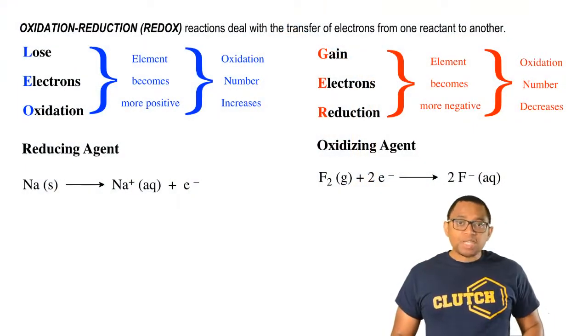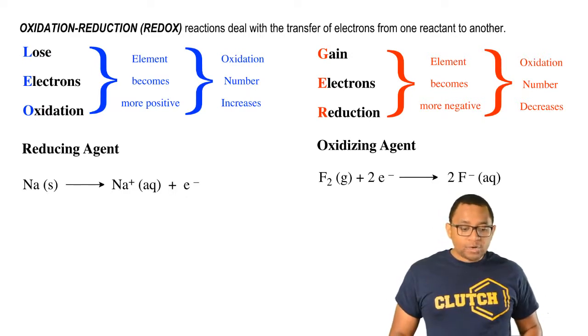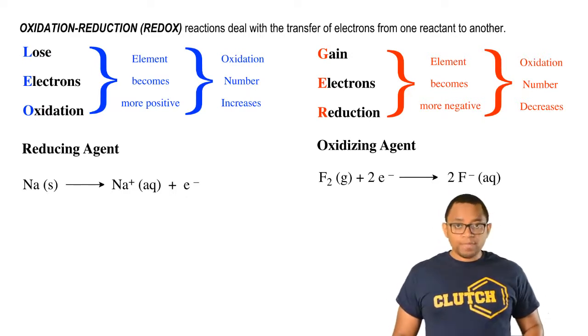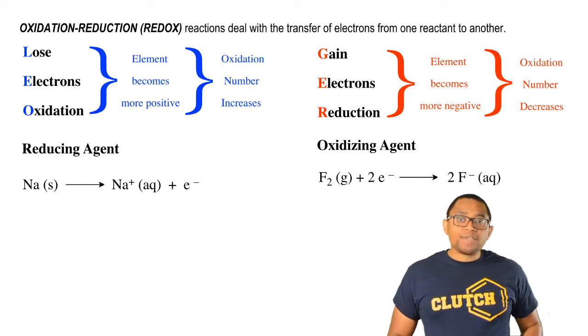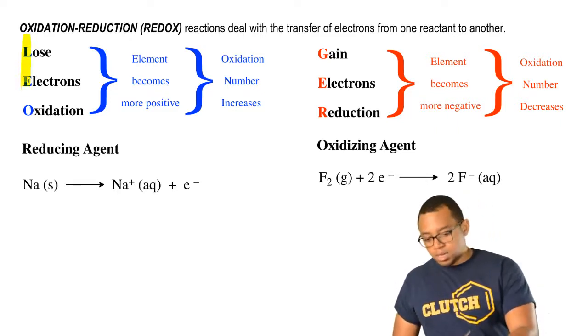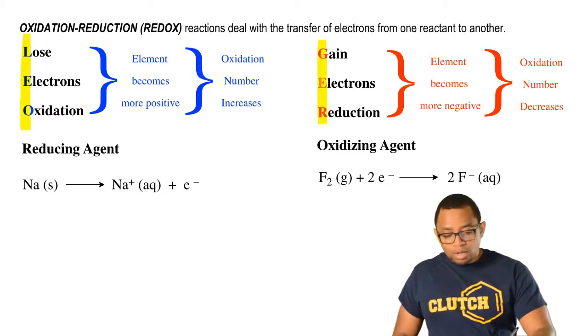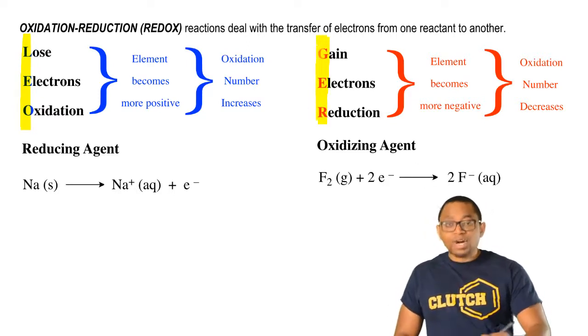Oxidation and reduction, or redox reactions, deal with the transfer of electrons from one reactant to another. To understand oxidation versus reduction, we simply say that Leo the lion goes ger.